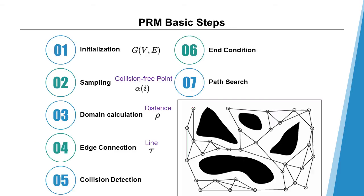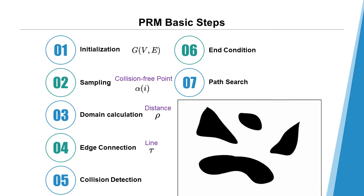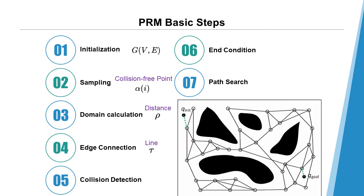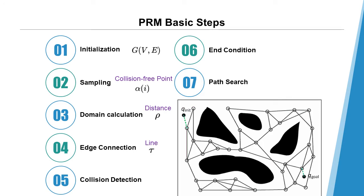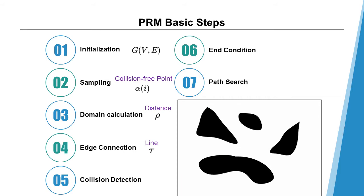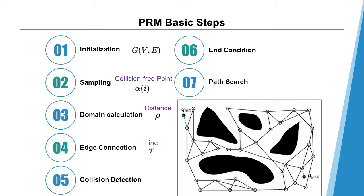This method can be separated into the following steps. First, initialization. We set up an undirected graph where the vertex set V represents all the collision-free configurations and the connection set E represents all the collision-free paths. The initial state is empty.